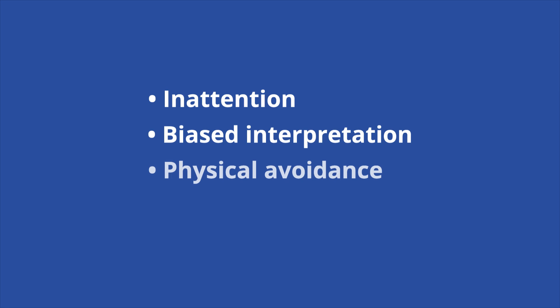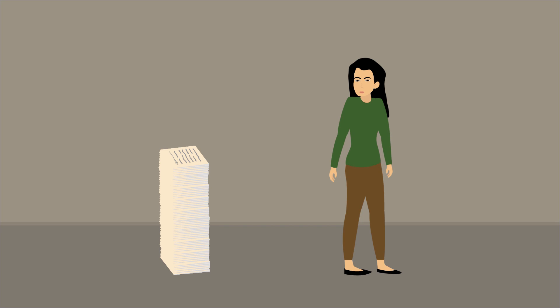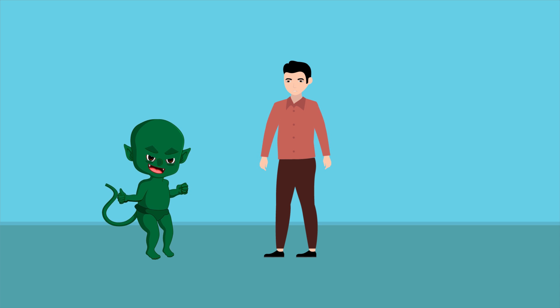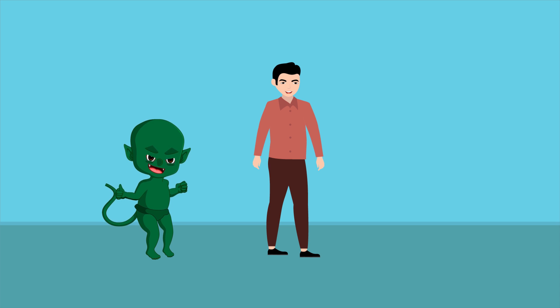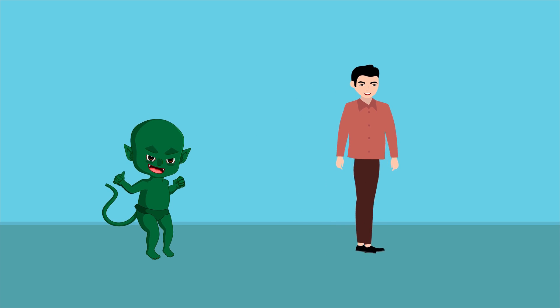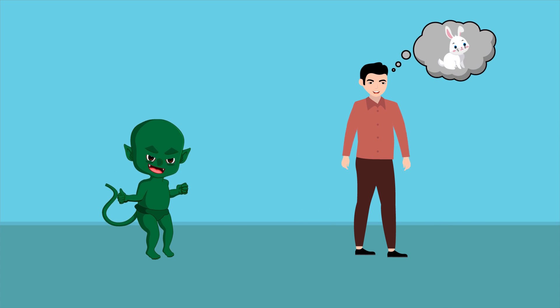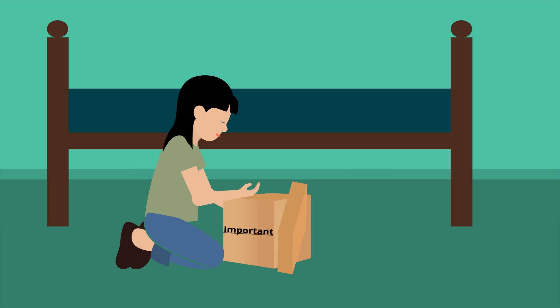People use a wide variety of tactics to avoid information including inattention, biased interpretation, physical avoidance, and forgetting. Inattention is the lack of attention paid to the information one is avoiding, even if it's readily available. If one still gets exposed to the information, biased interpretation allows them to interpret it in a way that removes all of the negative implications. Physical avoidance is the most common form of avoidance. Simply abstain from any tangible thing that may contain or communicate the unwanted information, like a newspaper or a bill.